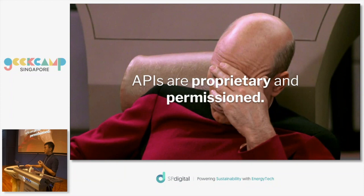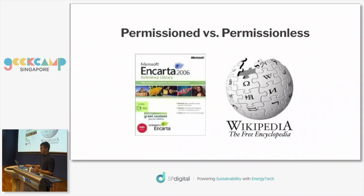This is the problem with using centralized platforms. Because these APIs are proprietary and permissioned, once they get traction all the power is on them and you can't do anything about it. So I'm going to tell you another story that illustrates the difference between permission and permissionless.